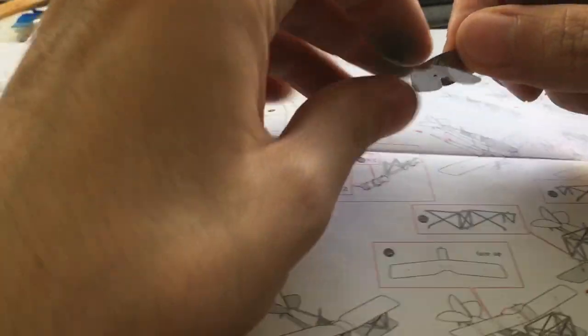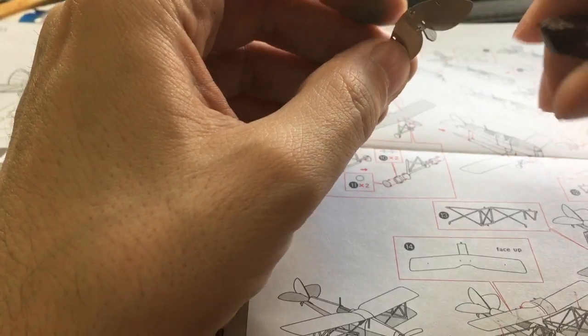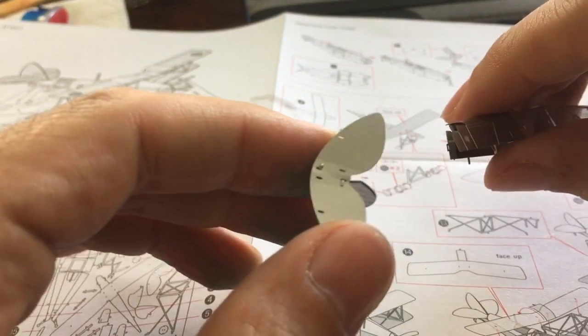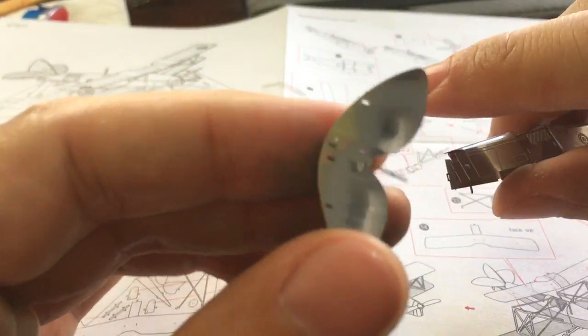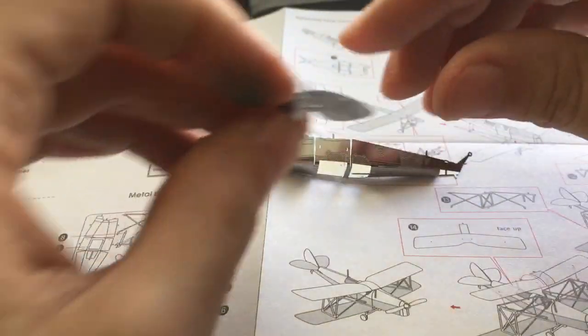bend it in half and then put these little tiny tabs into the holes and then bend them into place. You may think it's easy but it's quite tricky, so yeah, takes a lot